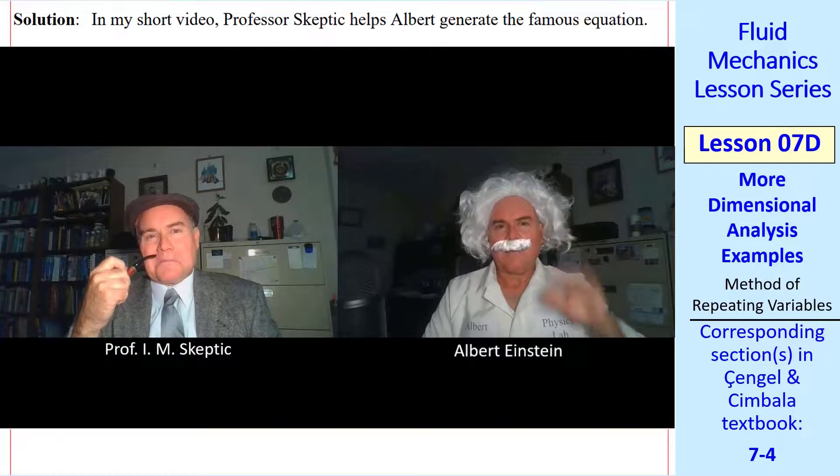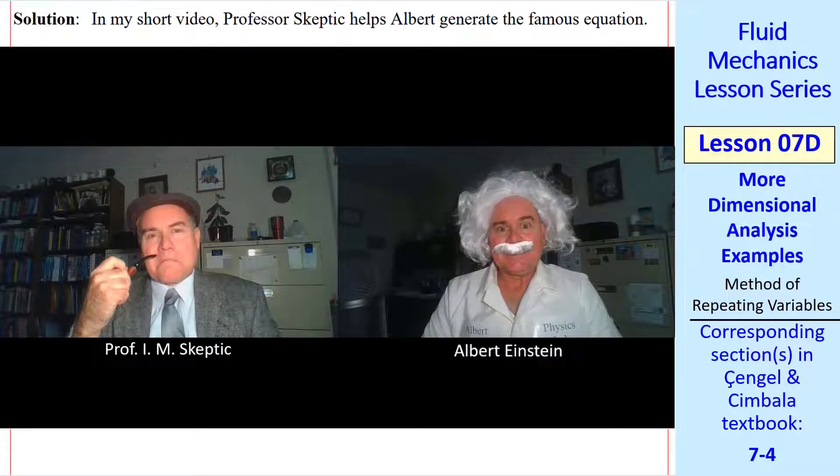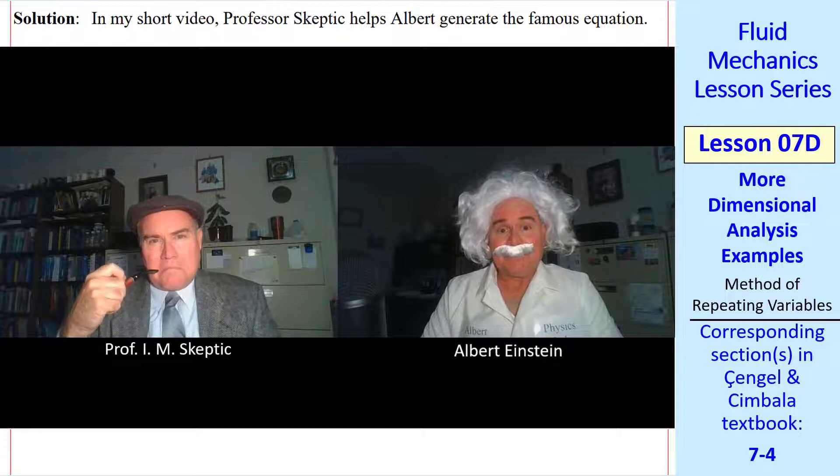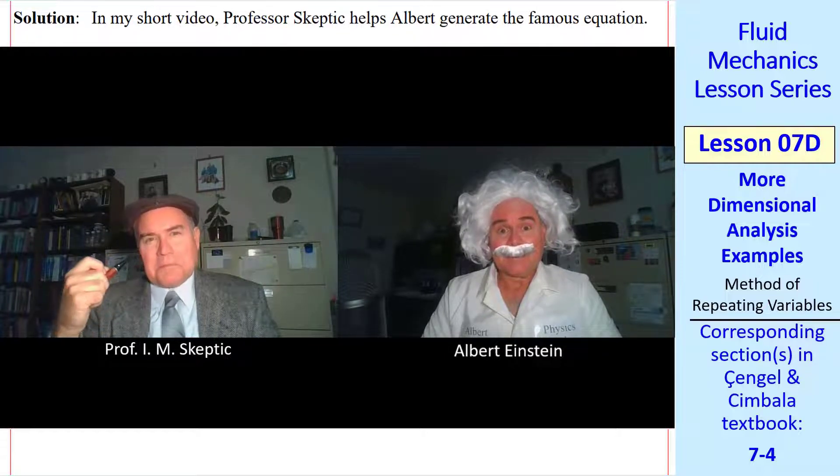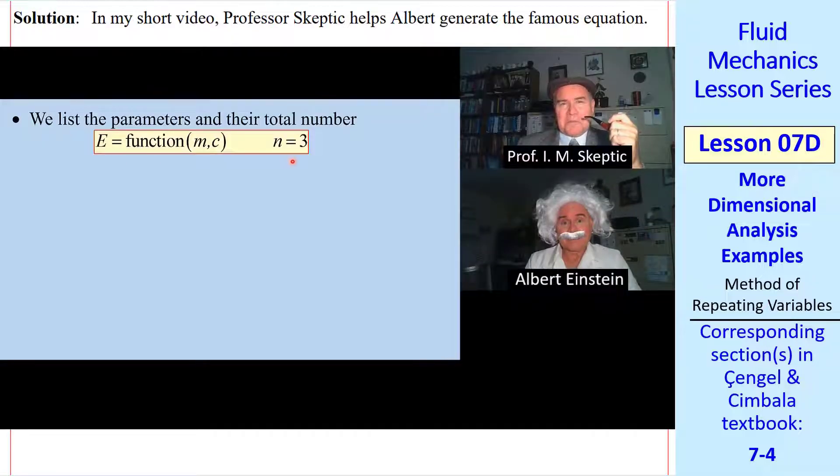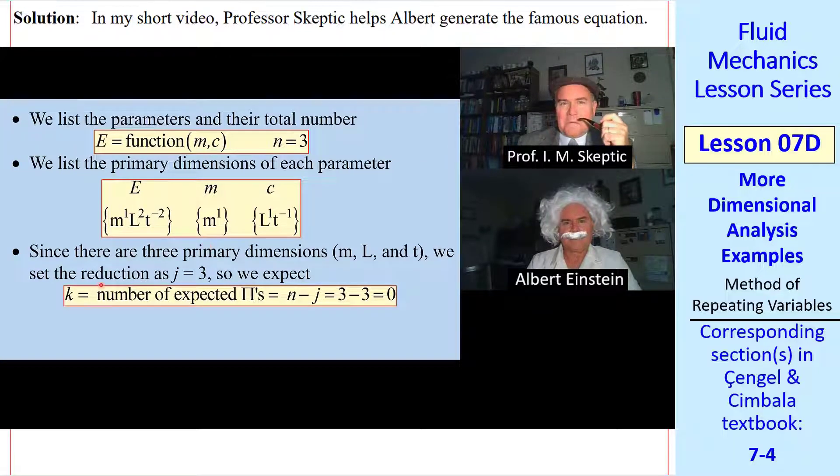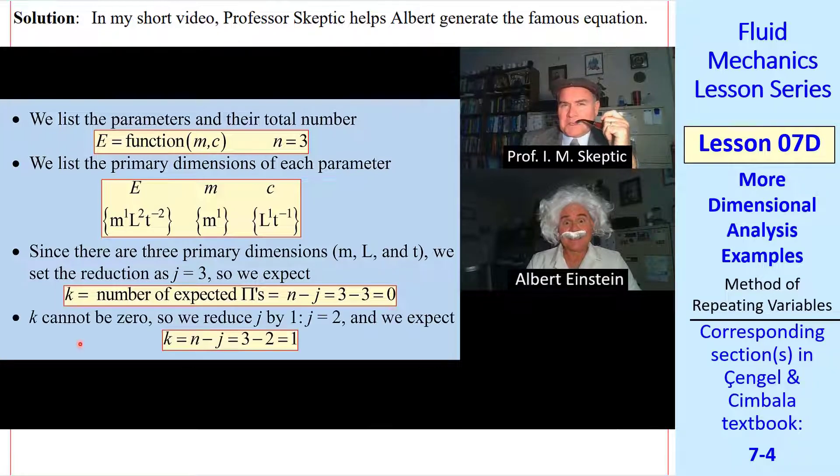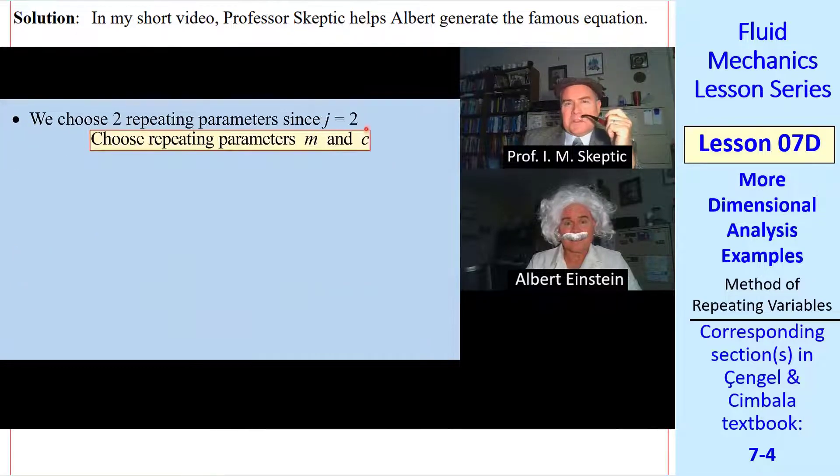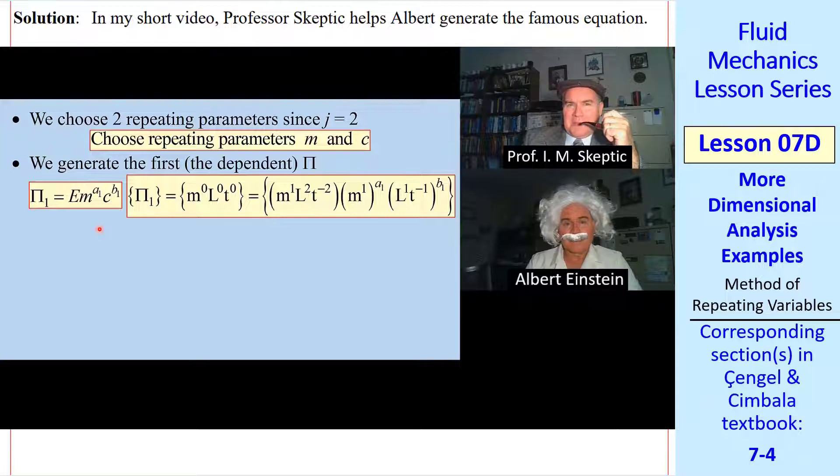Hello Albert, how are you doing? Hello, I am well, but I am stuck on this problem. I think that the energy is a function of the mass and the speed of light. But I cannot come up with the equation. Dimensional analysis can help. Let me share my screen. First we list the parameters. There are three of them. Then we list the primary dimensions of each parameter. In the MLT system, the dimensions of energy, mass, and speed of light are shown. Since there are three primary dimensions, ML and T, we set the reduction as j equal 3. So we expect k, the number of pi's, is n minus j, or 3 minus 3, which is 0. That makes no sense. We cannot have 0 pi's. True. For cases like this, we reduce j by 1. When j equals 2, we get k equals 1. Thus we expect one non-dimensional parameter, or pi. Since j equals 2, we pick two repeating parameters. I chose the two independent ones, m and c.